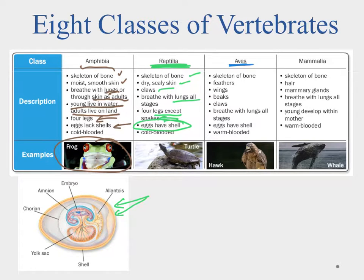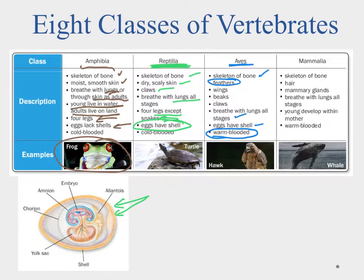Next is the class Aves, or the birds. As always they have a bony skeleton. Their unique trait is feathers — a modified scale-like structure — which allow them to fly and provide warmth, making them warm-blooded. They also have an egg with a shell, so they can live their entire life on land. They breathe with lungs at all stages, and have wings for flight, beaks, and claws.